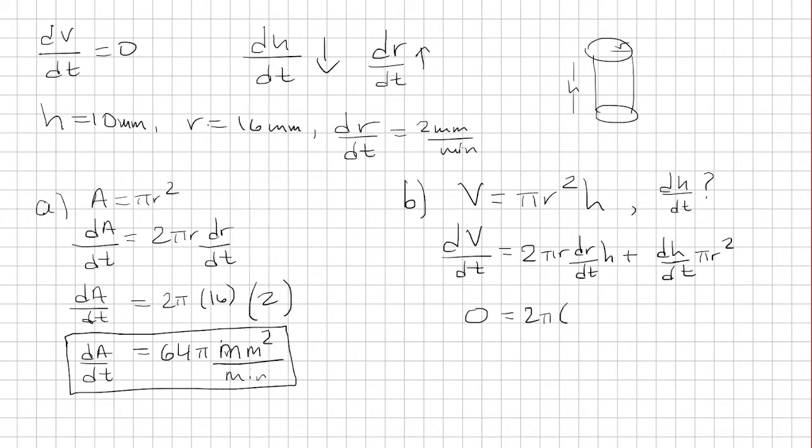And the radius was given to us as 16 millimeters. dr/dt is 2 millimeters per minute. And then h, the height, is 10 millimeters.